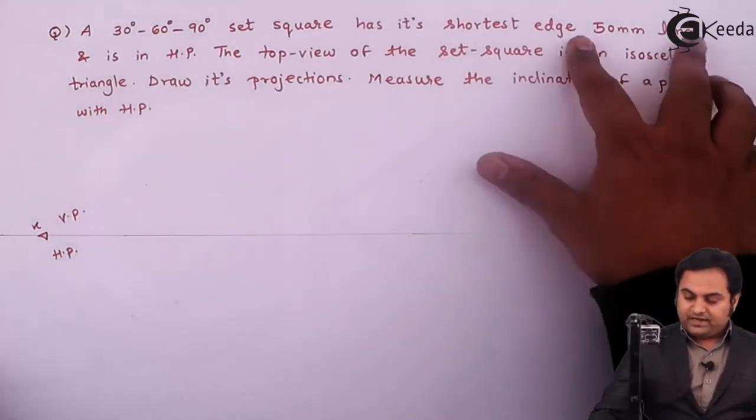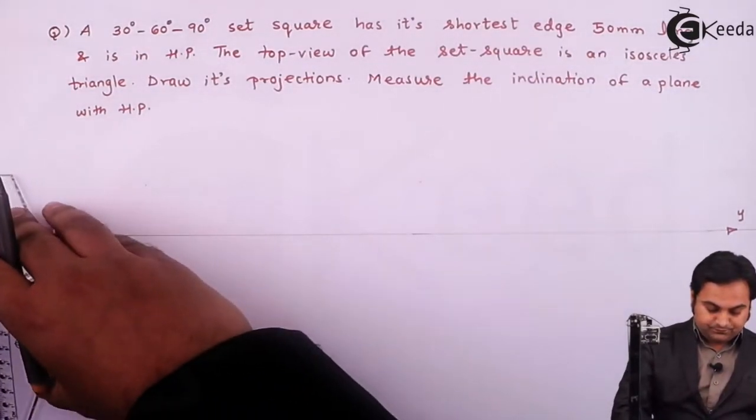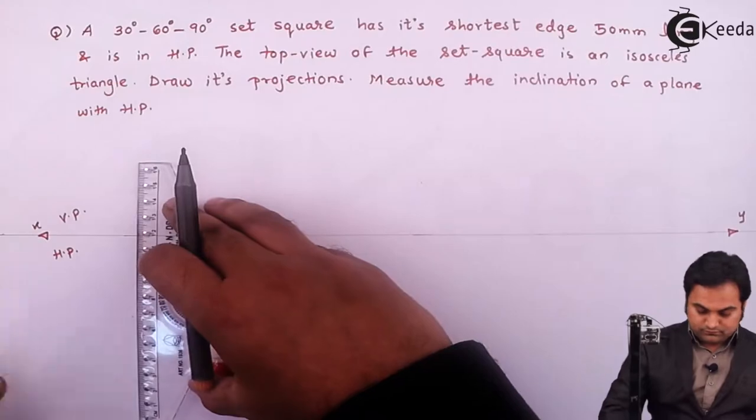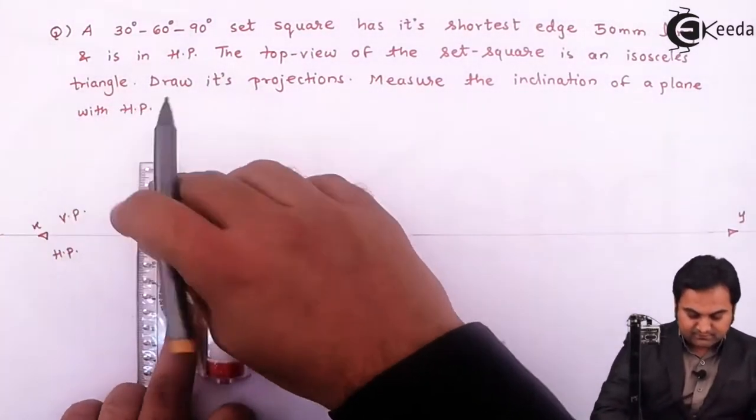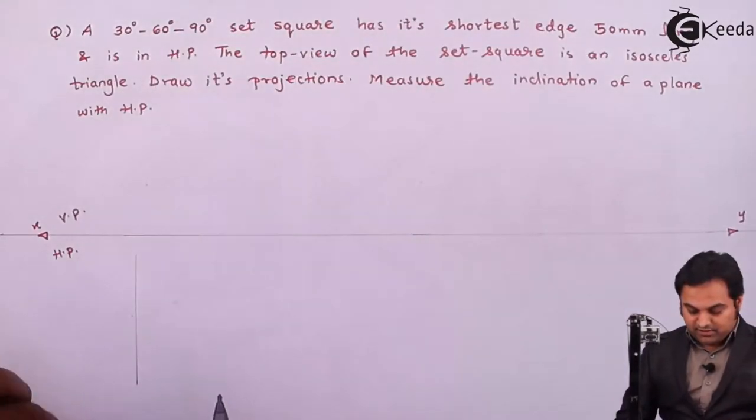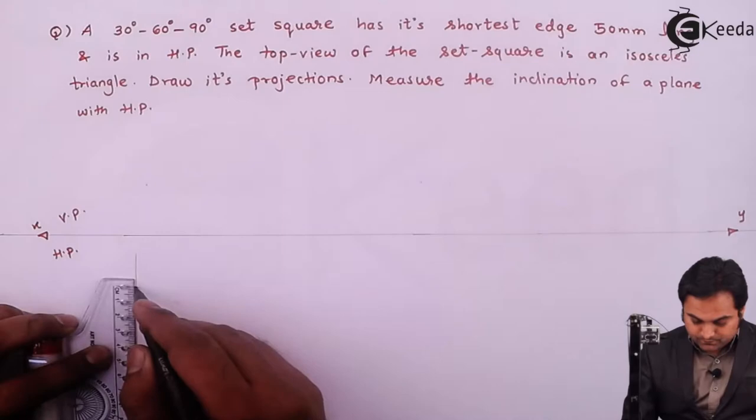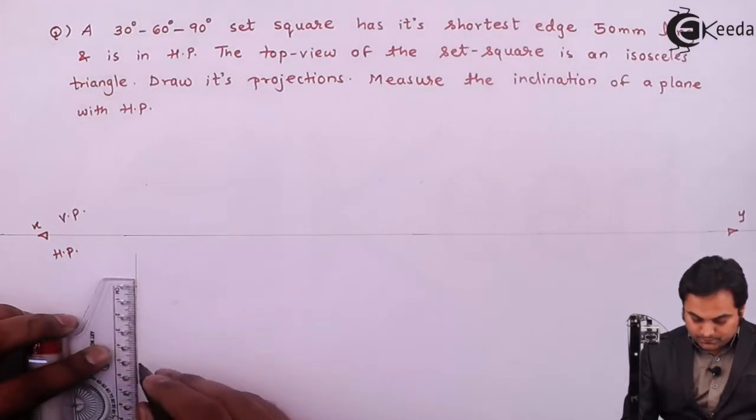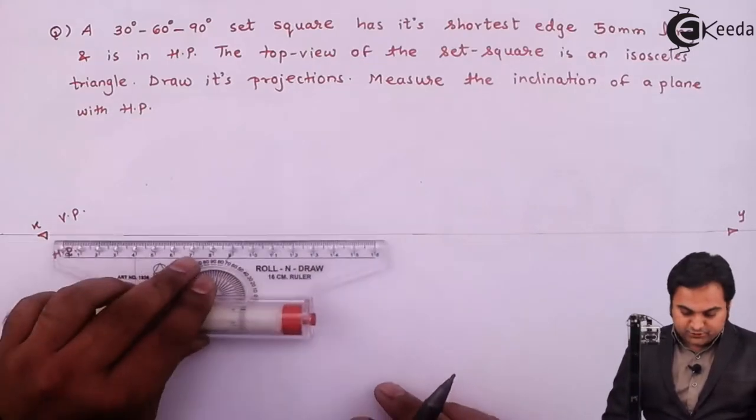So I'll take that shortest edge and draw it here with the help of light vertical line. Then marking 50mm over it. So only one of the edge is given for the set square.